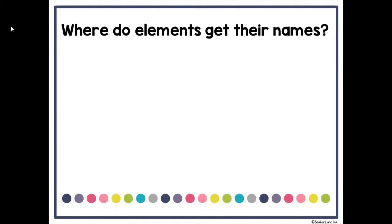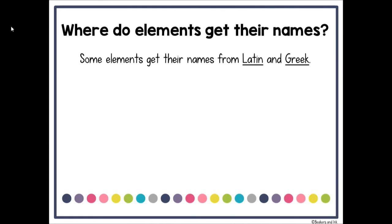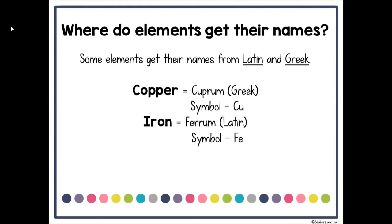Where do elements get their names? Some elements get their names from Latin or Greek words. Copper, for example, was 'cuprum' in Greek and the symbol is Cu from that original name. Iron is 'ferrum' in Latin and the symbol is Fe. Lead, 'plumbum,' is Latin and its symbol is Pb. So there are a few elements whose symbols don't quite match the names we use today.